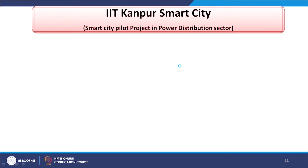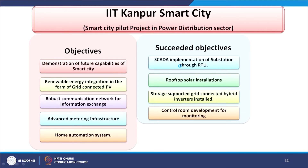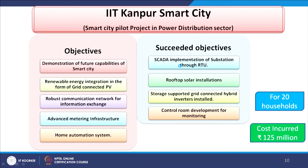IIT Kanpur also initiated a smart grid project under smart city. They tried SCADA implementation of a substation through RTUs, rooftop solar installations, storage-supported grid-connected hybrid inverters, and control room development for monitoring. They have taken 20 households and tried to execute a kind of smart grid concept that can be extended so that energy efficiency can be achieved.